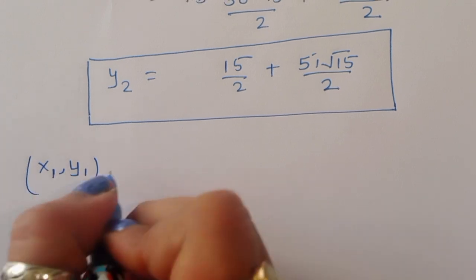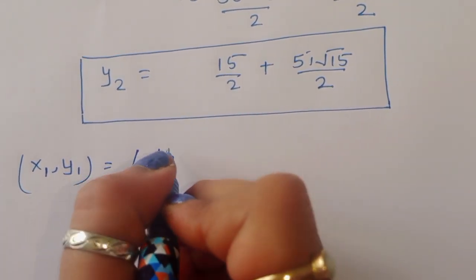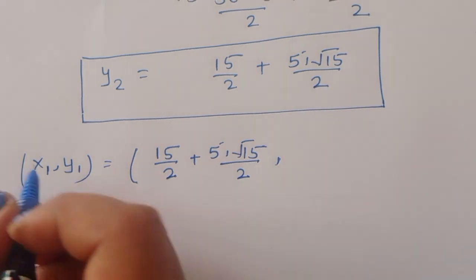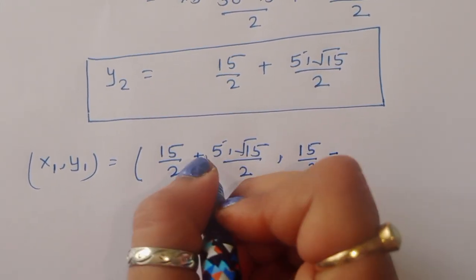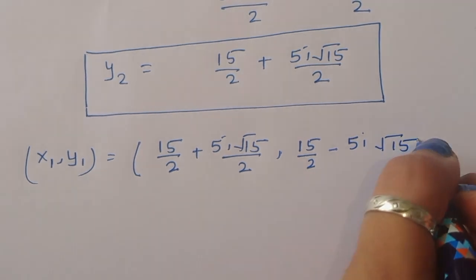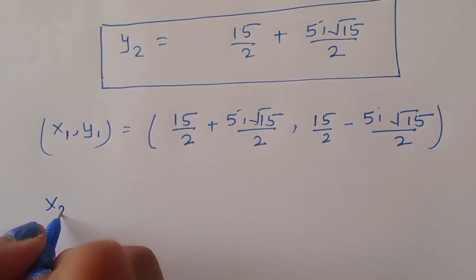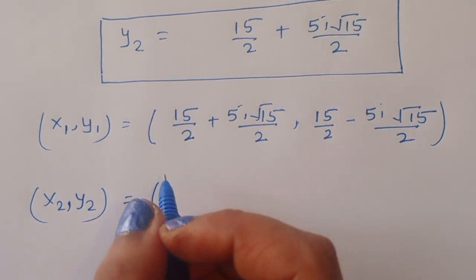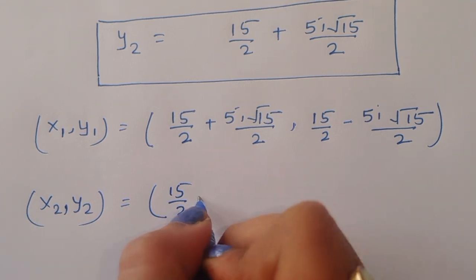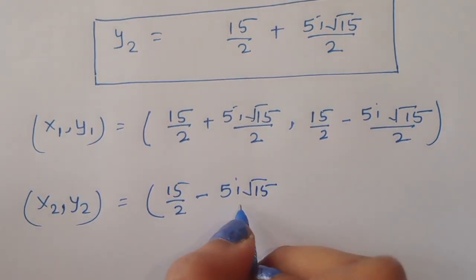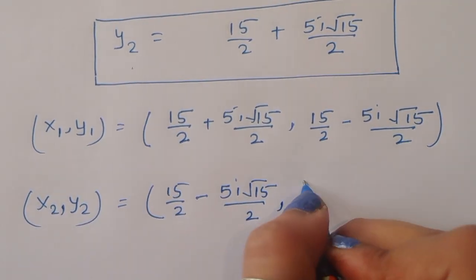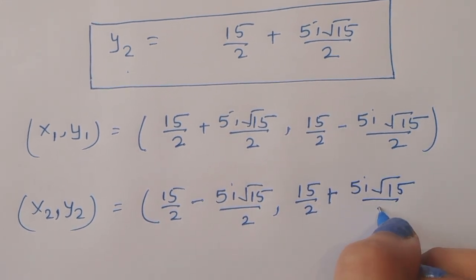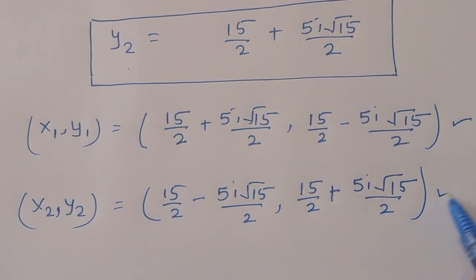To summarize: x1 equals (15 by 2) plus (5i square root of 15) by 2, and y1 equals (15 by 2) minus (5i square root of 15) by 2. For the second pair: x2 equals (15 by 2) minus (5i square root of 15) by 2, and y2 equals (15 by 2) plus (5i square root of 15) by 2. Now let's verify these values.